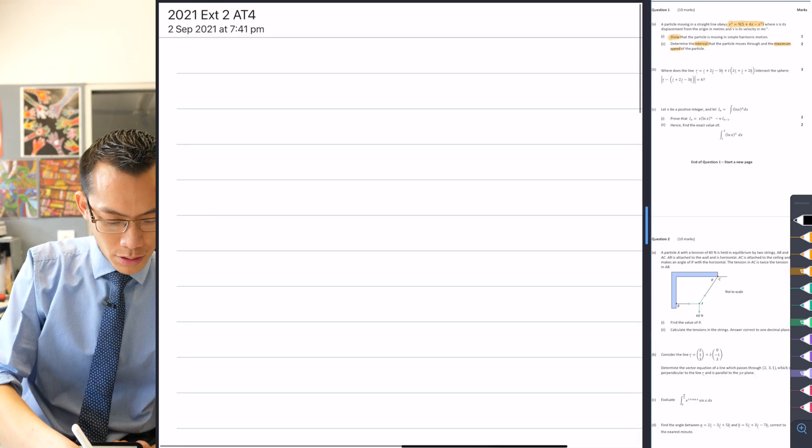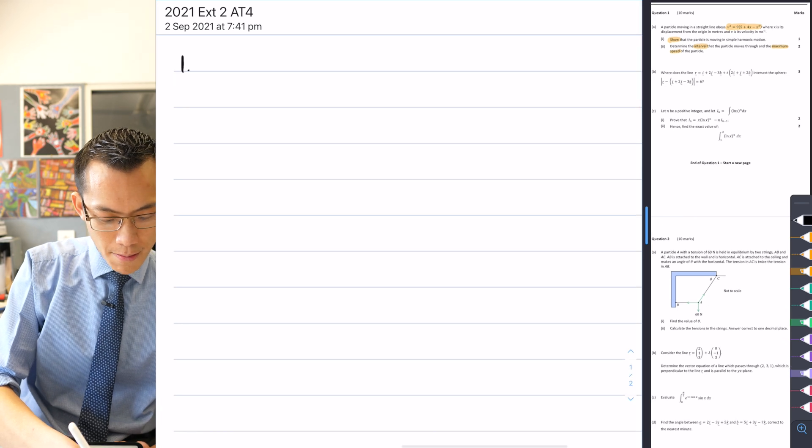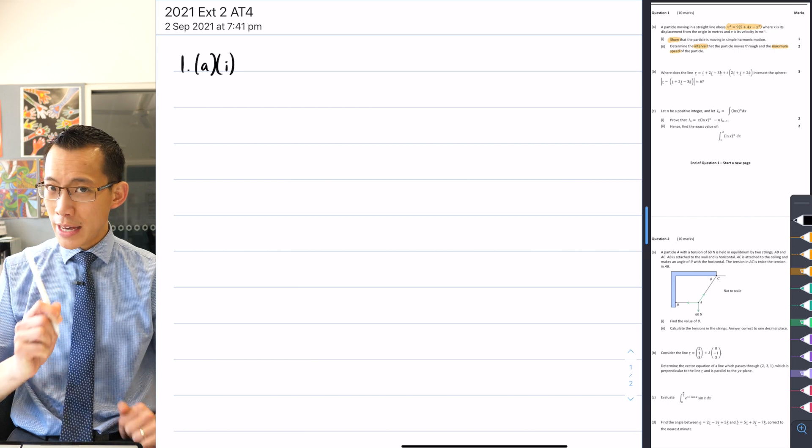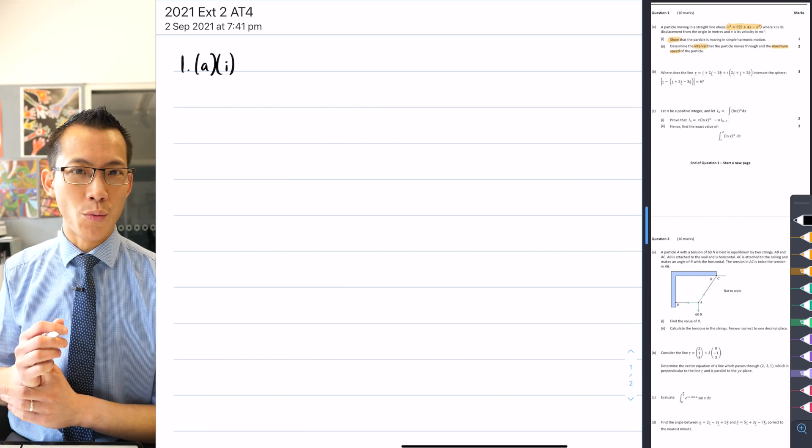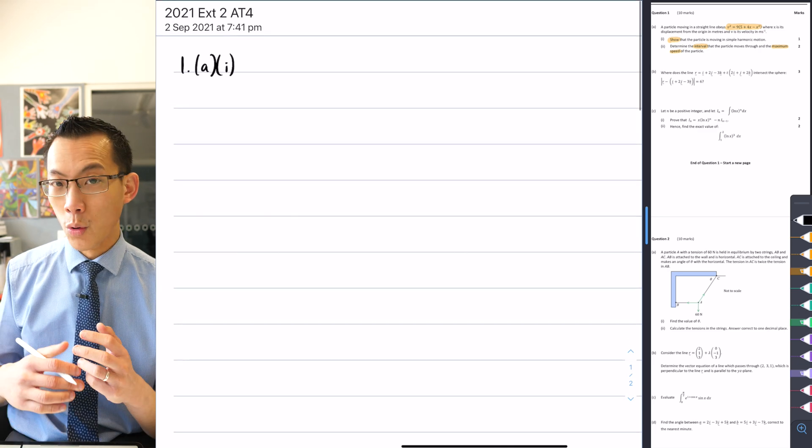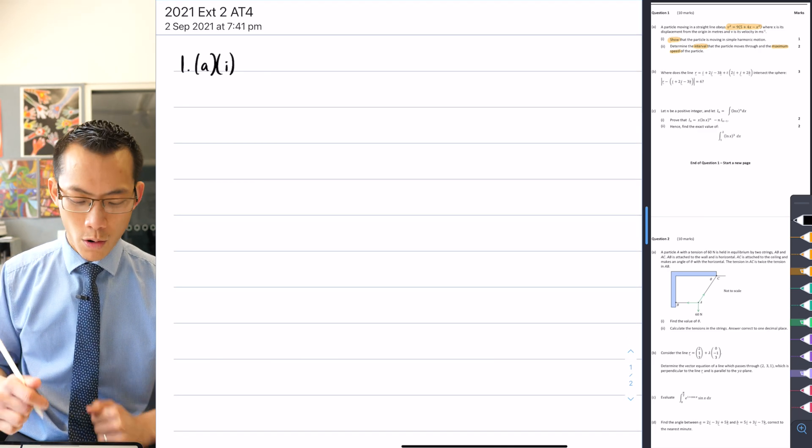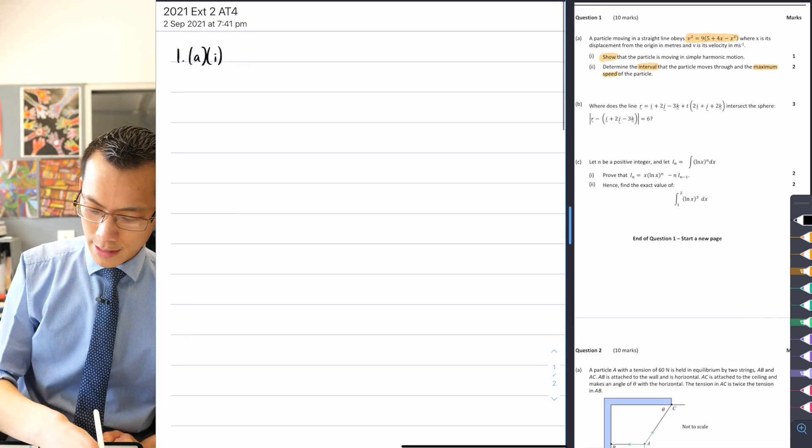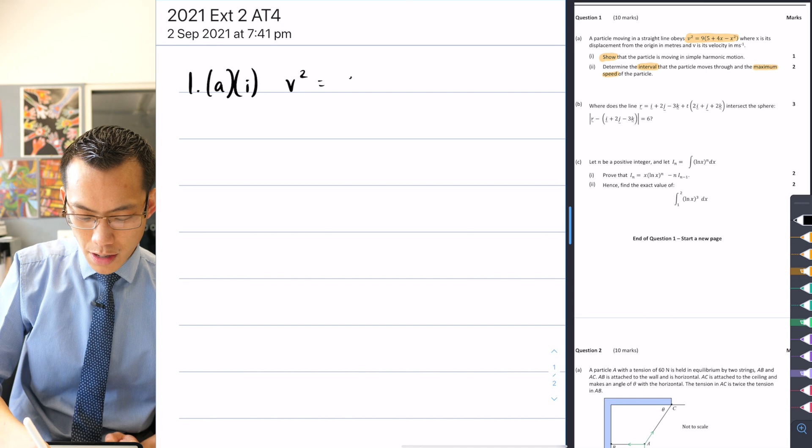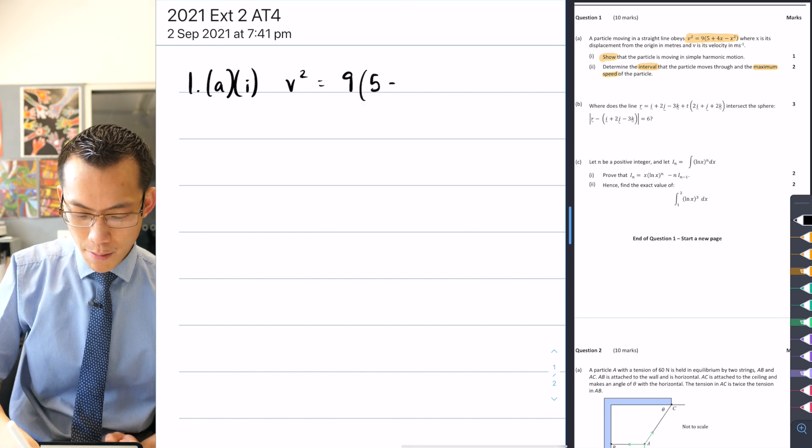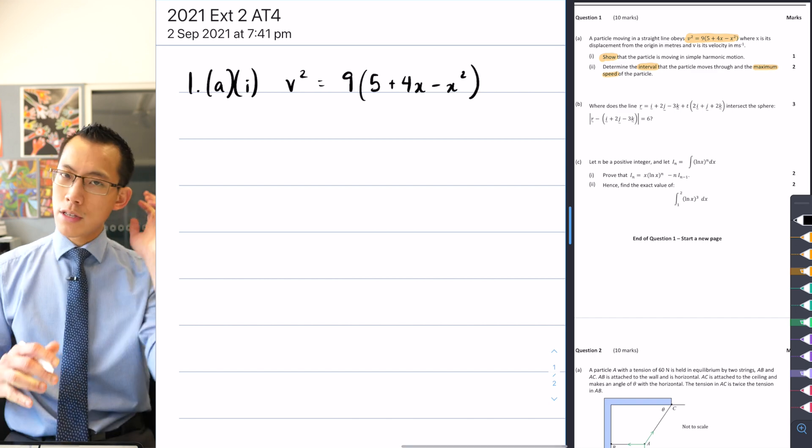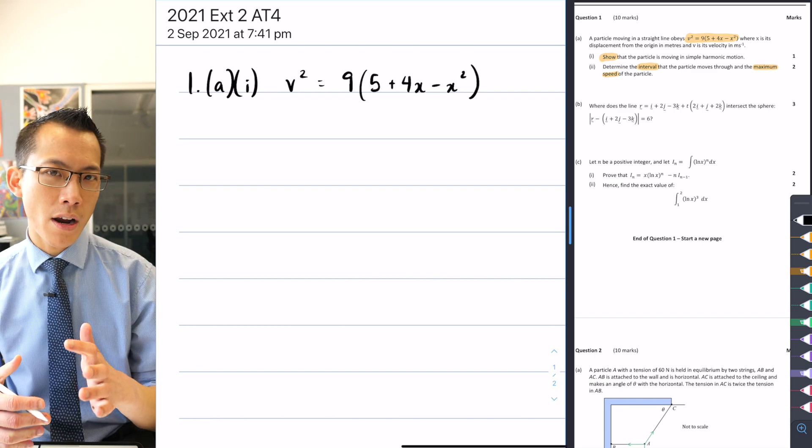Let's have a look at question one, part a, let's look at part one first. So as we already flagged, we're going to need to work with this equation that's given to us. It's kind of the only piece of information that will decide for us whether this is going to be simple harmonic motion or not. And you can see right there, I think that's just big enough for us to read, it's v² = 9(5 + 4x - x²). So if this is where we can start, where are we going to go?